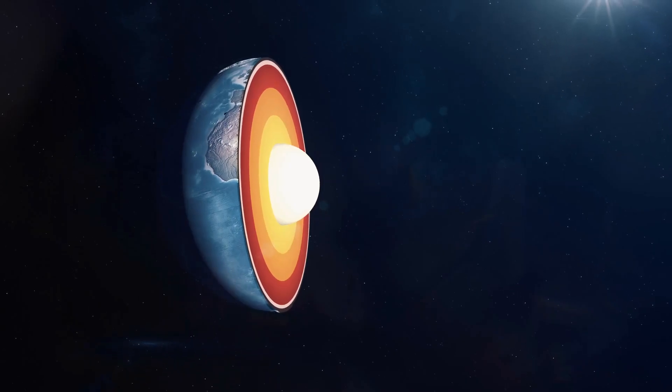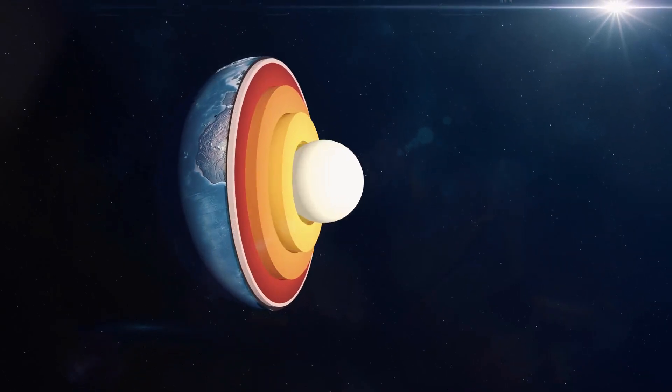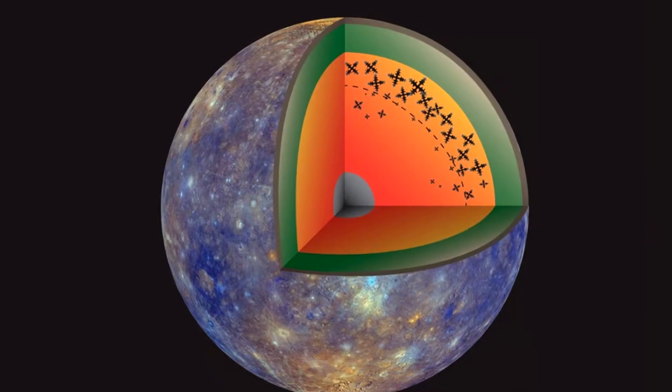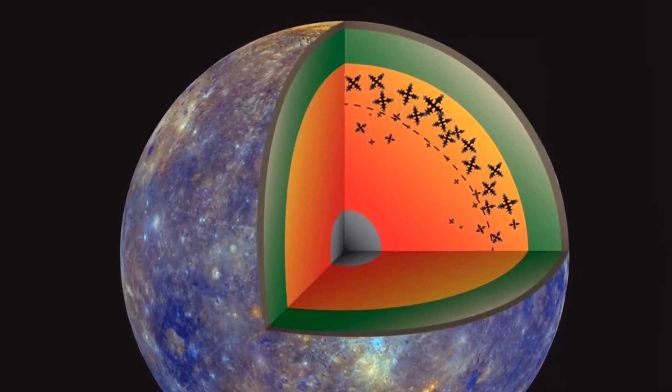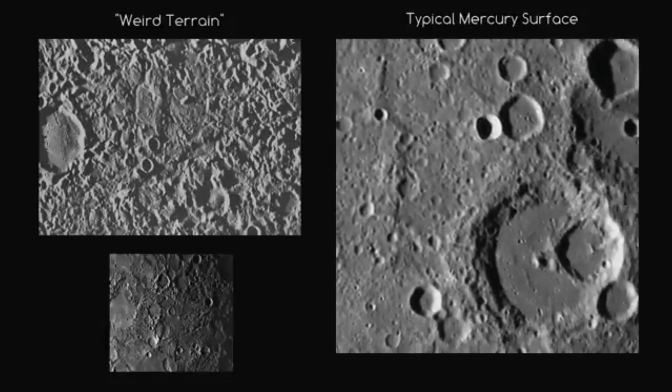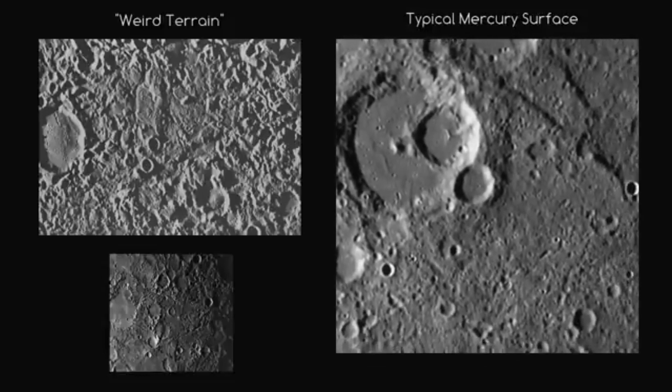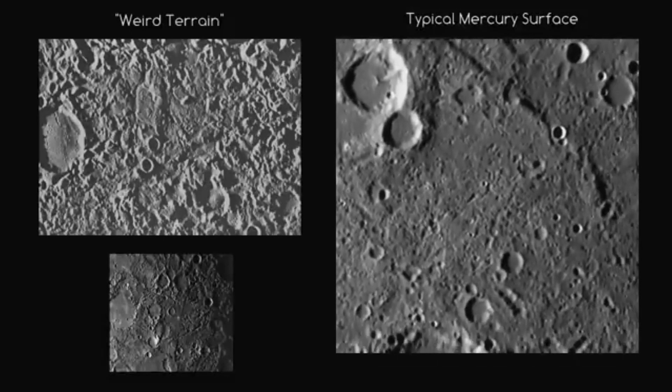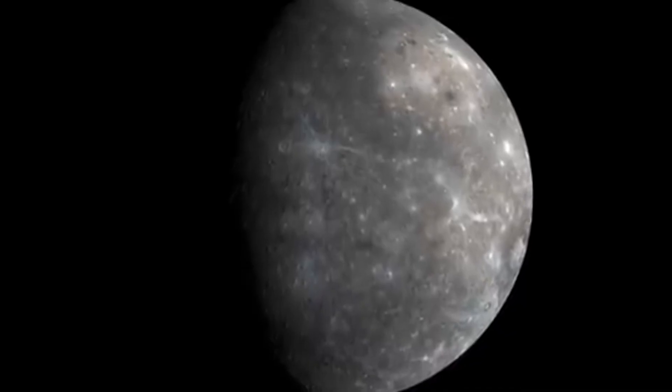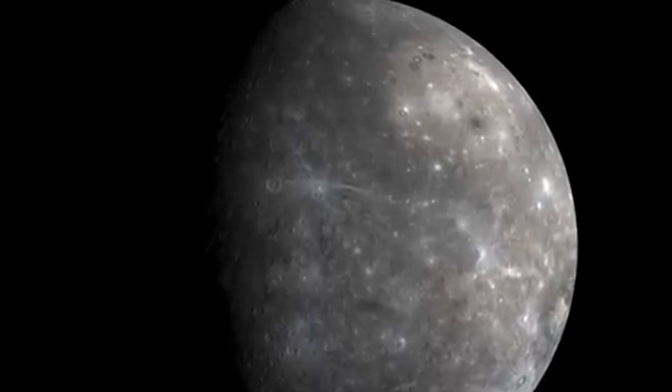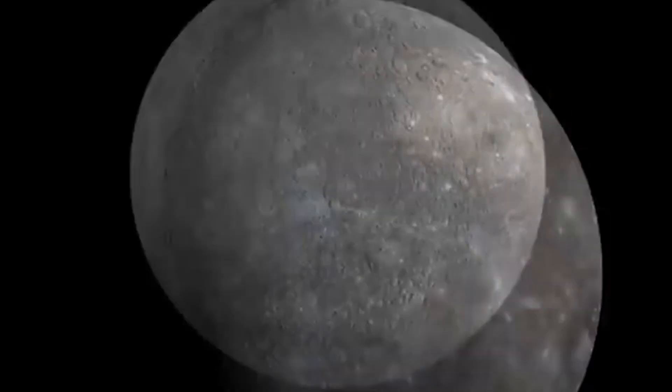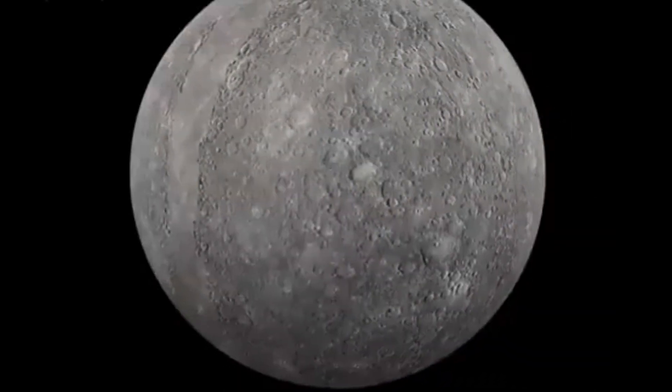One fascinating aspect of Mercury's core is its structure. Unlike Earth's core, which has a solid inner core surrounded by a liquid outer layer, Mercury's core is predominantly liquid with a solid center. This unusual core composition was confirmed by NASA's Messenger mission. It is believed that Mercury's solid inner core is approximately 1,260 miles or 2,000 kilometers wide, nearly half the total volume of the core.